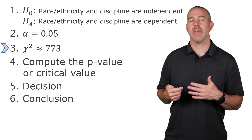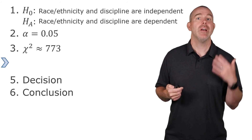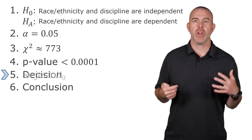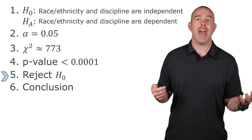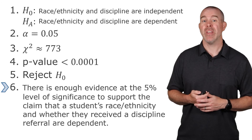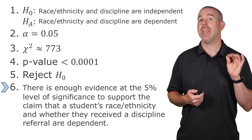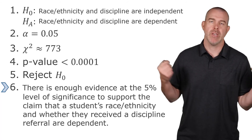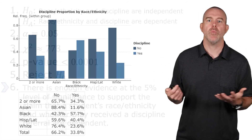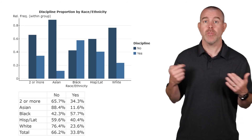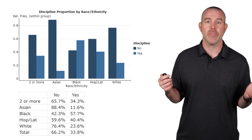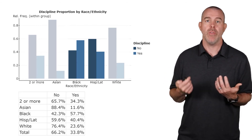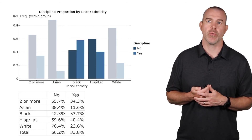So our test statistic is 773 and the p-value is less than 0.0001 — less than one ten-thousandth. So clearly here we're going to reject the null hypothesis. That means there is enough evidence to support our claim that race or ethnicity and whether they received a discipline referral are dependent. We kind of already knew that because we already had that graph — we can see that the bars are not the same for all the different groups, especially for those two groups where the discipline rate is much higher than the others.